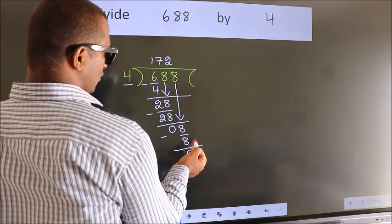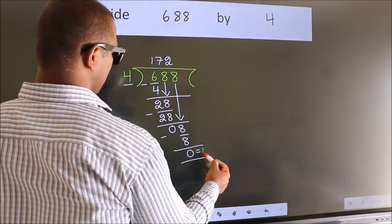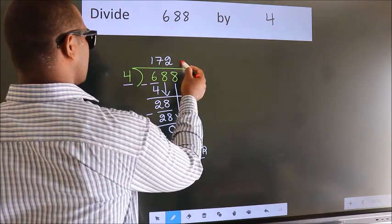No more numbers to bring it down. So, we stop here. This is our remainder. This is our quotient.